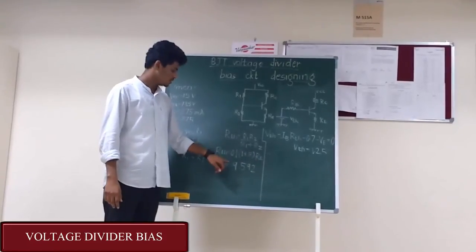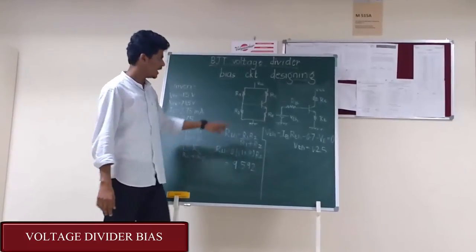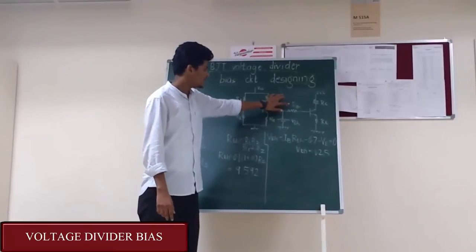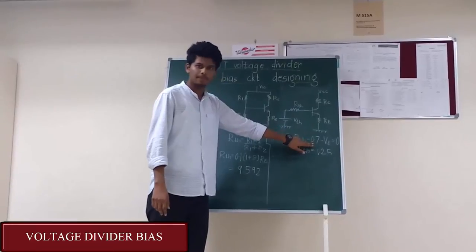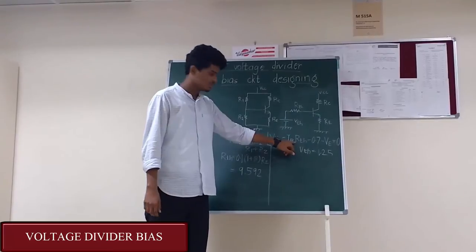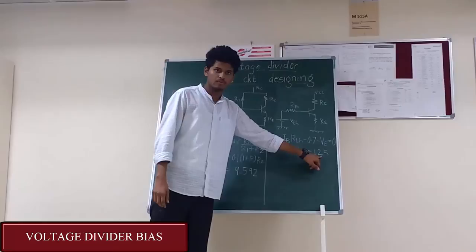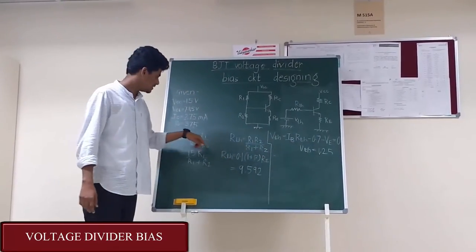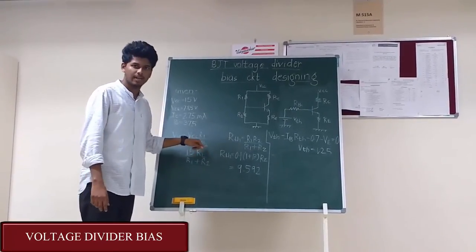Thus as we know the value of RTH, we can apply KVL so that we get VTH - IB*RTH - 0.7 (this 0.7 is VBE) - VE = 0. As we know the value of RTH, we can calculate the value of VTH that comes out to 1.25 volts. As we have the two equations of VTH and RTH, and the unknowns are R1 and R2, we can find the values of R1 and R2.